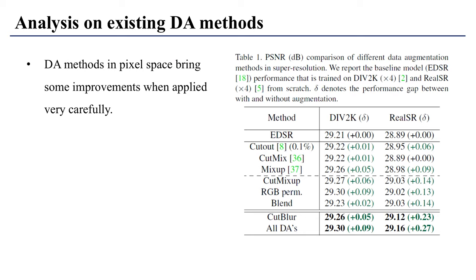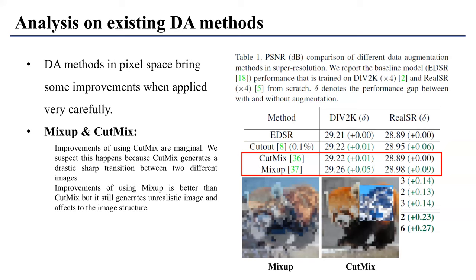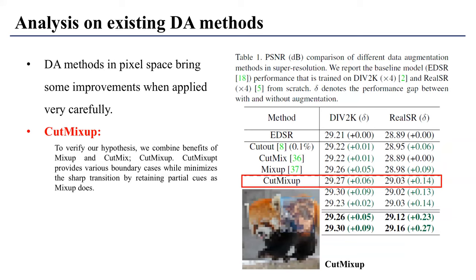On the contrary, we found that pixel-space methods can bring some improvement when applied carefully. For example, if we change the original cutout percentage from 25% to 0.1% — which is just two or three pixels in the patch — this gives a slight marginal improvement without degrading performance. Mix-up and CutMix showed marginal improvement also, but interestingly mix-up brings quite a good performance gain. We hypothesize this because mix-up does not have a sharp transition boundary or discard pixels, giving some augmentation effect. Testing this hypothesis by combining both cut-mix and mix-up indeed brings better improvement.